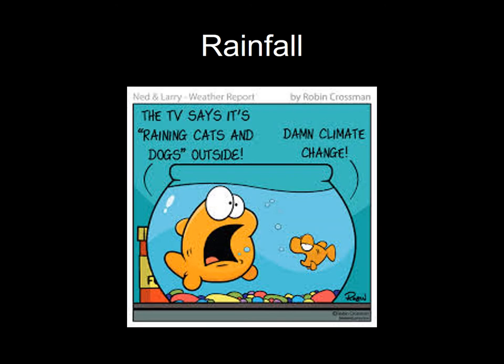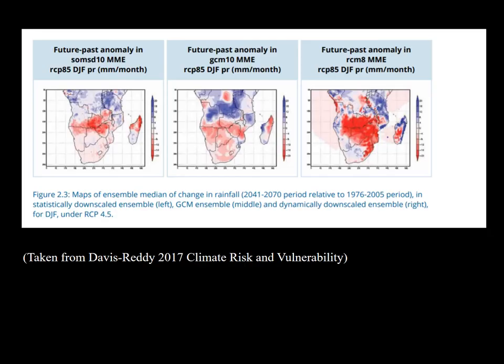Climate change also affects rainfall. Looking at projections for Southern Africa, different models give slightly different projections for December, January and February, but all seem to show a decrease in mean rainfall along the coast. They also predict that there'll be an increase in heavy rainfall events — high intensity rainfall events — particularly along the east coast.